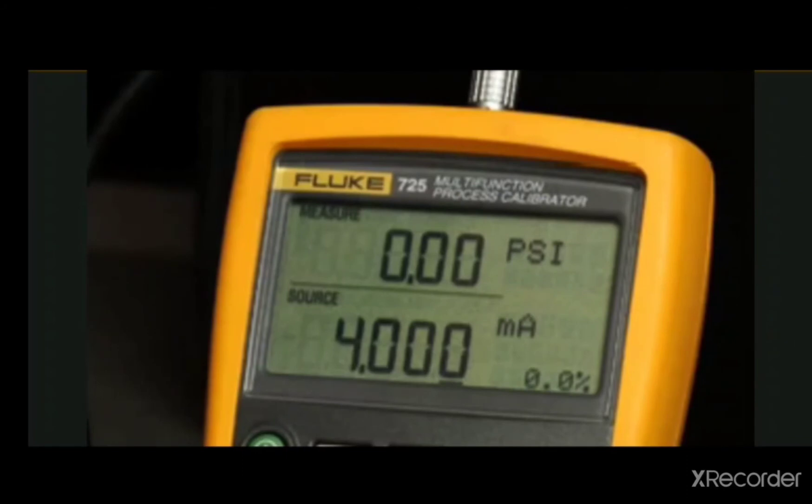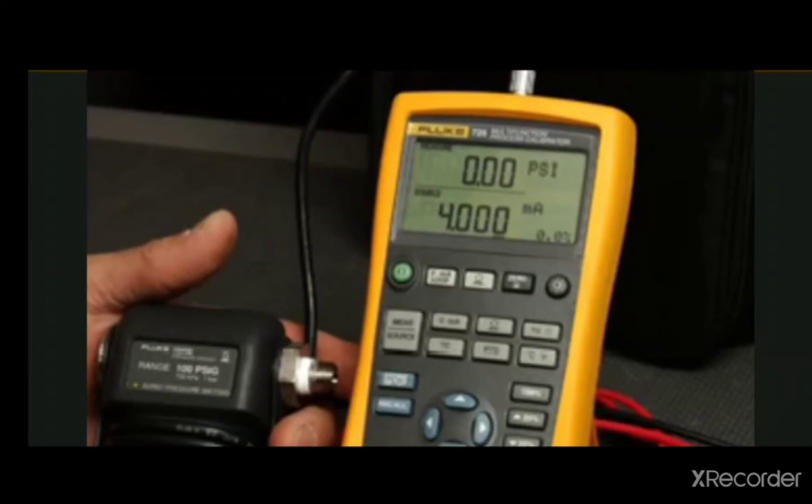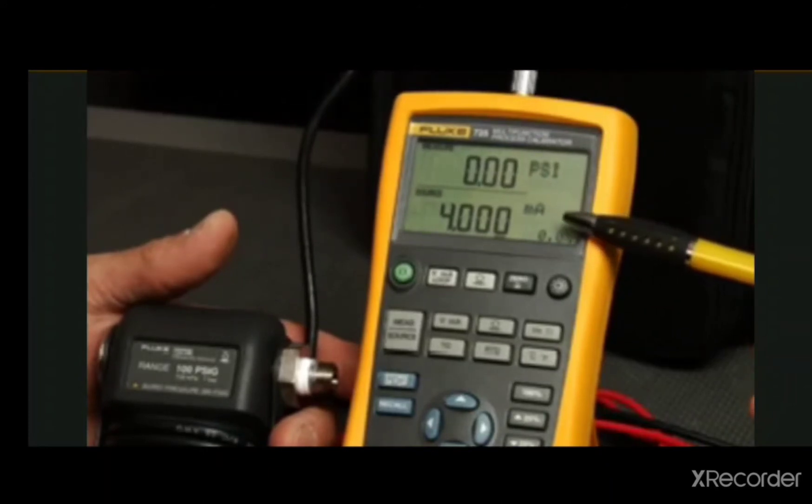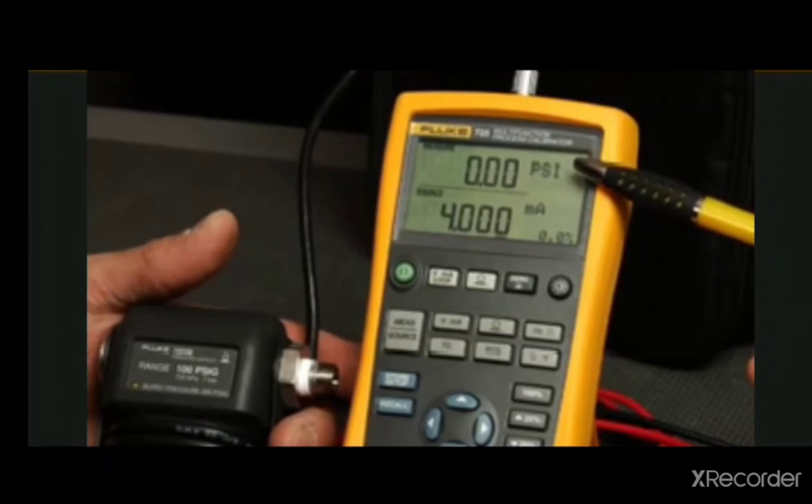Since the 725 has a dual screen, you can view both the input and output values applied to the transmitter or other process device being tested. For example, you can test valves, I2Ps, and view the milliamp value being sourced, as well as the milliamp or pressure on the output of the device simultaneously.